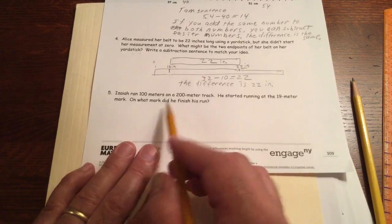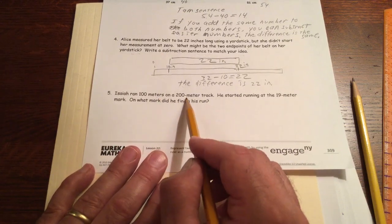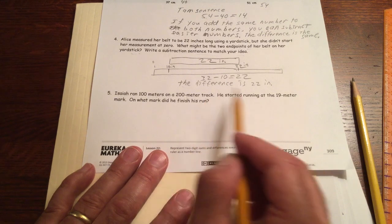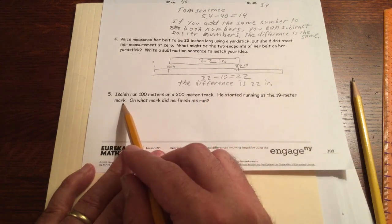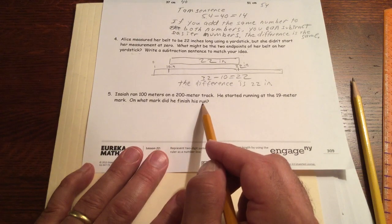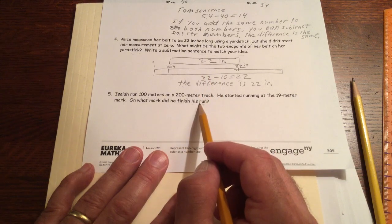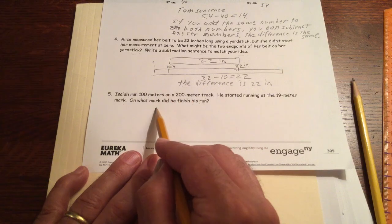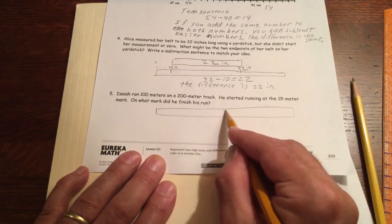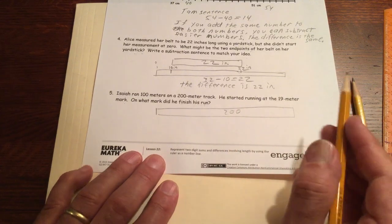The difference is 22 inches. Then we have Isaiah ran 100 meters on a 200 meter track. He started running at the 19 meter mark. On what mark did he finish his run? So here's the track. It's a 200 meter track. Let's make it really long because 200 is a big number, right?